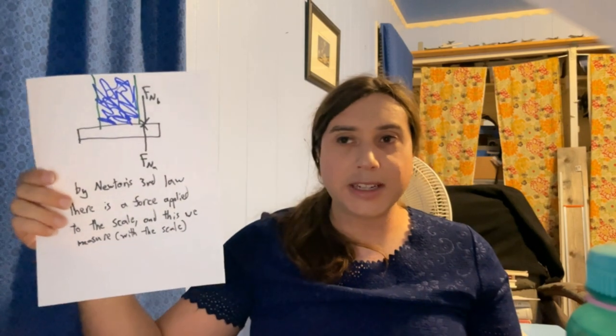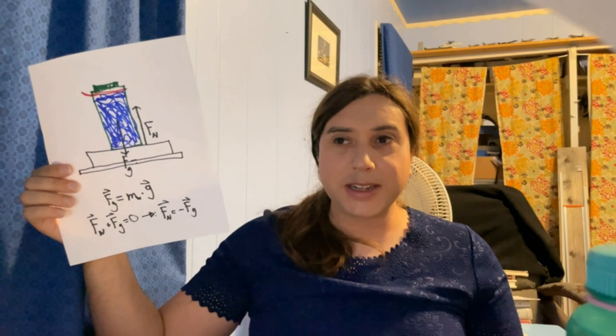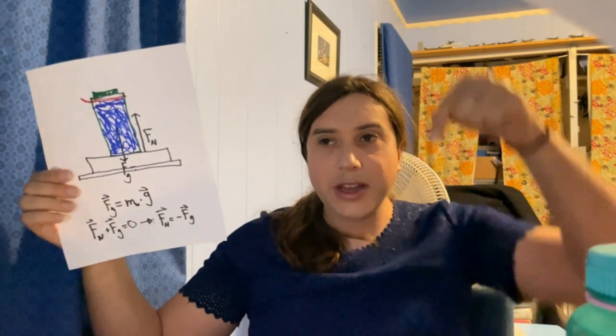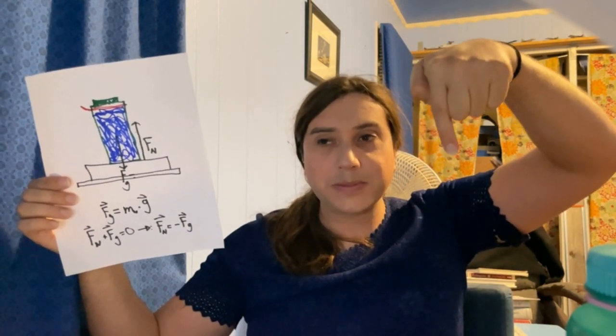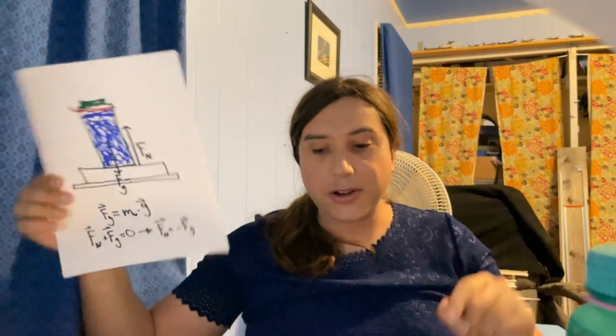That's a fairly simple example. Anytime you just have an object sitting on a flat surface, the free body diagram — the diagram showing all of the forces acting on an object — is just mass times the gravitational field strength pulling down, and then the normal force acting up counteracting it. But there are some more complicated situations that we're going to want to consider in the future.